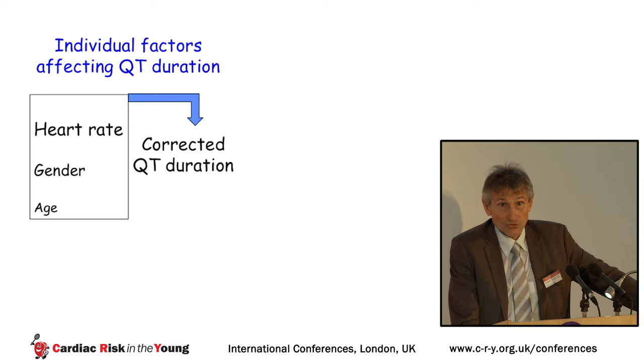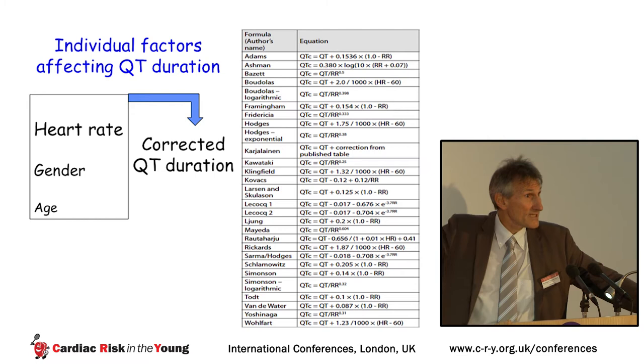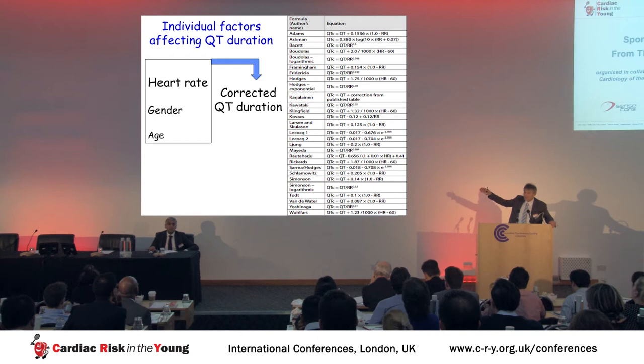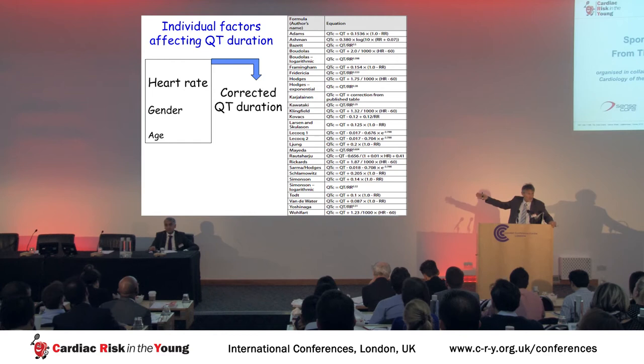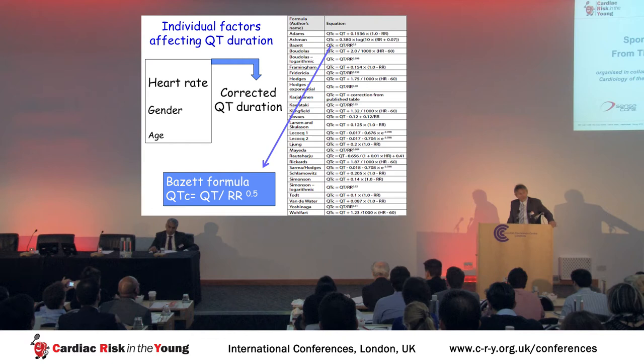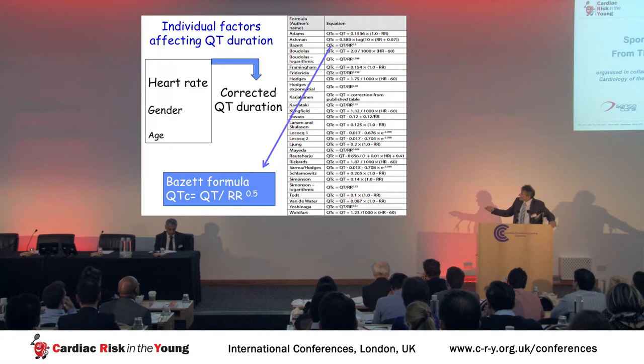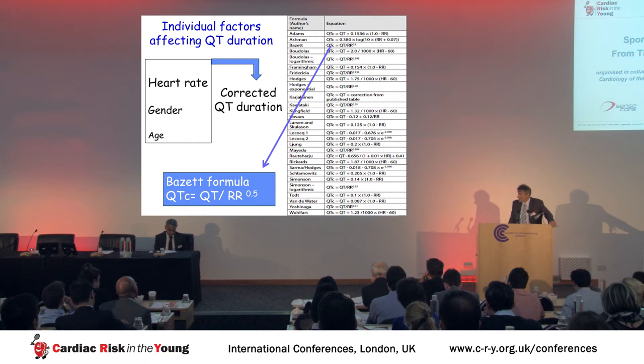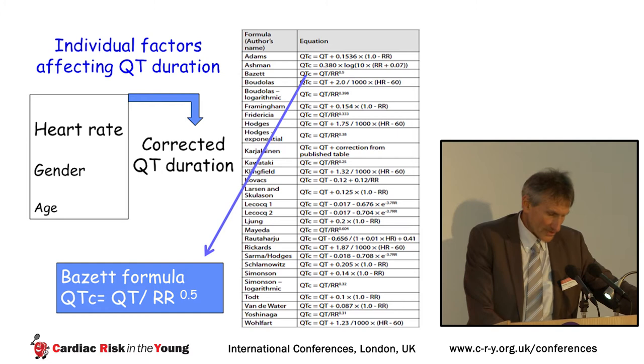There are many formulas to correct QT duration, and having so many means no single formula is ideal. The most used is the Bazette formula, which corrects absolute QT duration by the square root of the RR interval preceding the QT being measured. In young children, QT duration may also be longer.